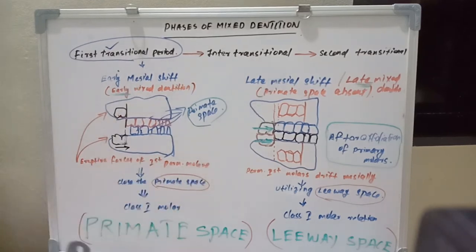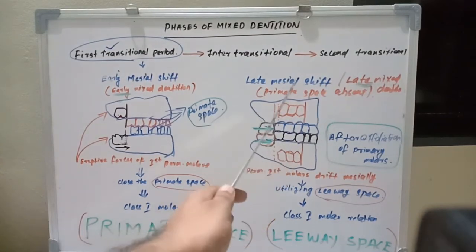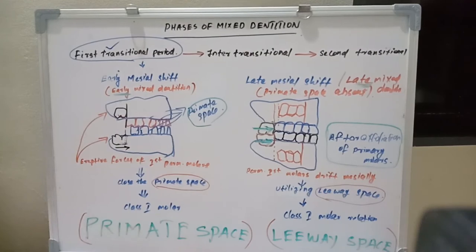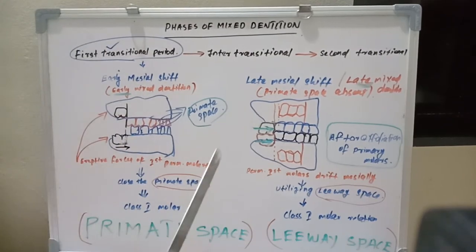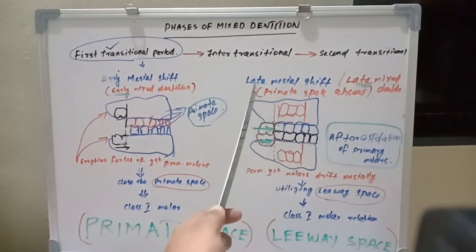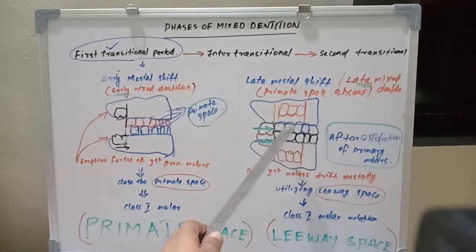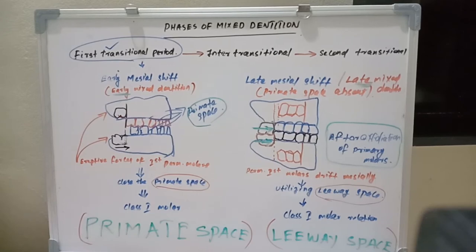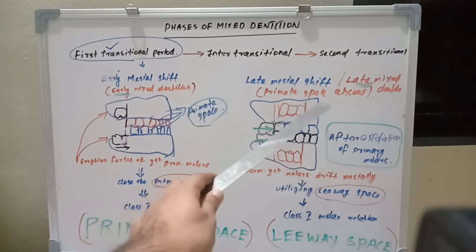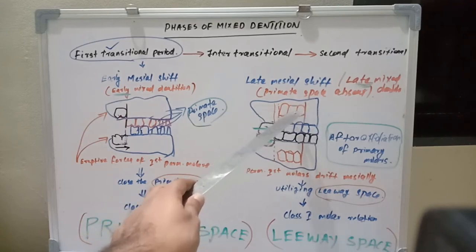Late mesial shift happens during the late mixed dentition period when primate space is absent. There is no space provided by the primary dentition for the first permanent molars, so it utilizes the leeway space instead. Leeway space is the difference between the combined mesiodistal width of the primary canine and molars versus the permanent canine and premolars — that difference is known as leeway space.